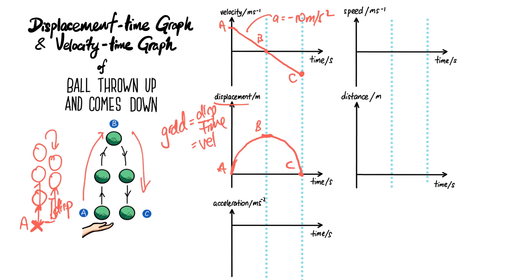For the acceleration-time graph, look at the velocity-time graph — its gradient represents acceleration. The gradient is a constant negative value throughout, so on the acceleration-time graph you draw a horizontal line at negative 10 m/s². The magnitude is 10 because on Earth, ignoring air resistance, acceleration due to free fall is always 10 m/s². Whether it's positive or negative depends on which direction you fix as positive.